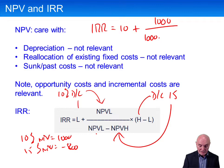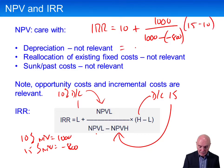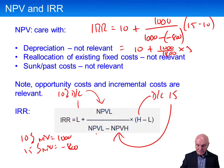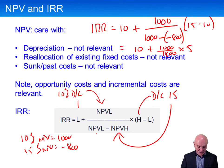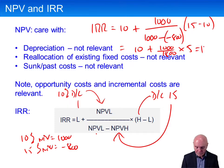So the internal rate of return would be the lower discount rate (10), plus NPV at the lower rate over NPV at the lower rate minus the negative NPV (800), over 15 minus 10. So it's going to be 10, plus 1,000 over 1,800, times 5. That gives us 10 divided by 18 times 5 — approximately 2.77 — so about 12.8%.